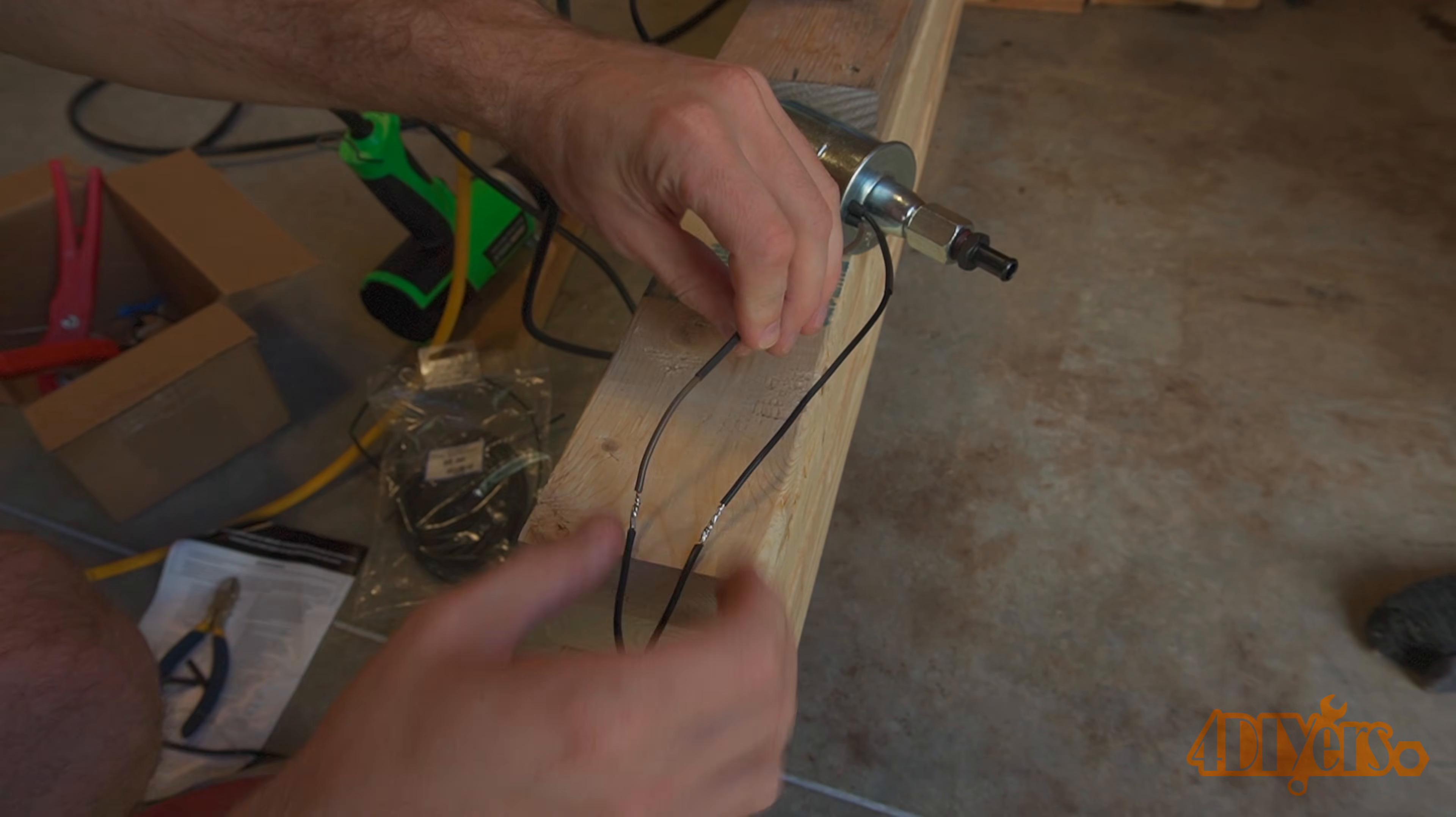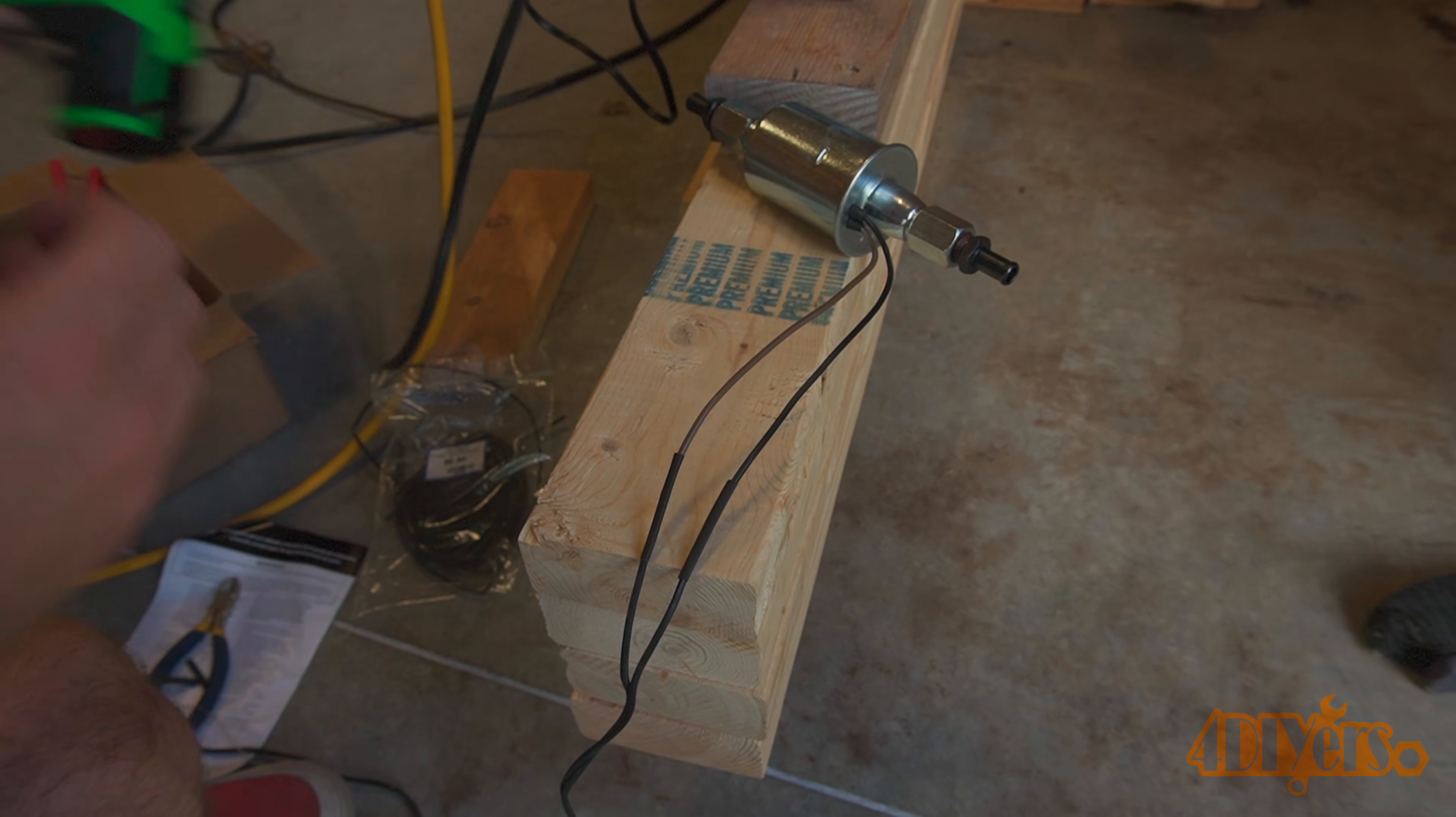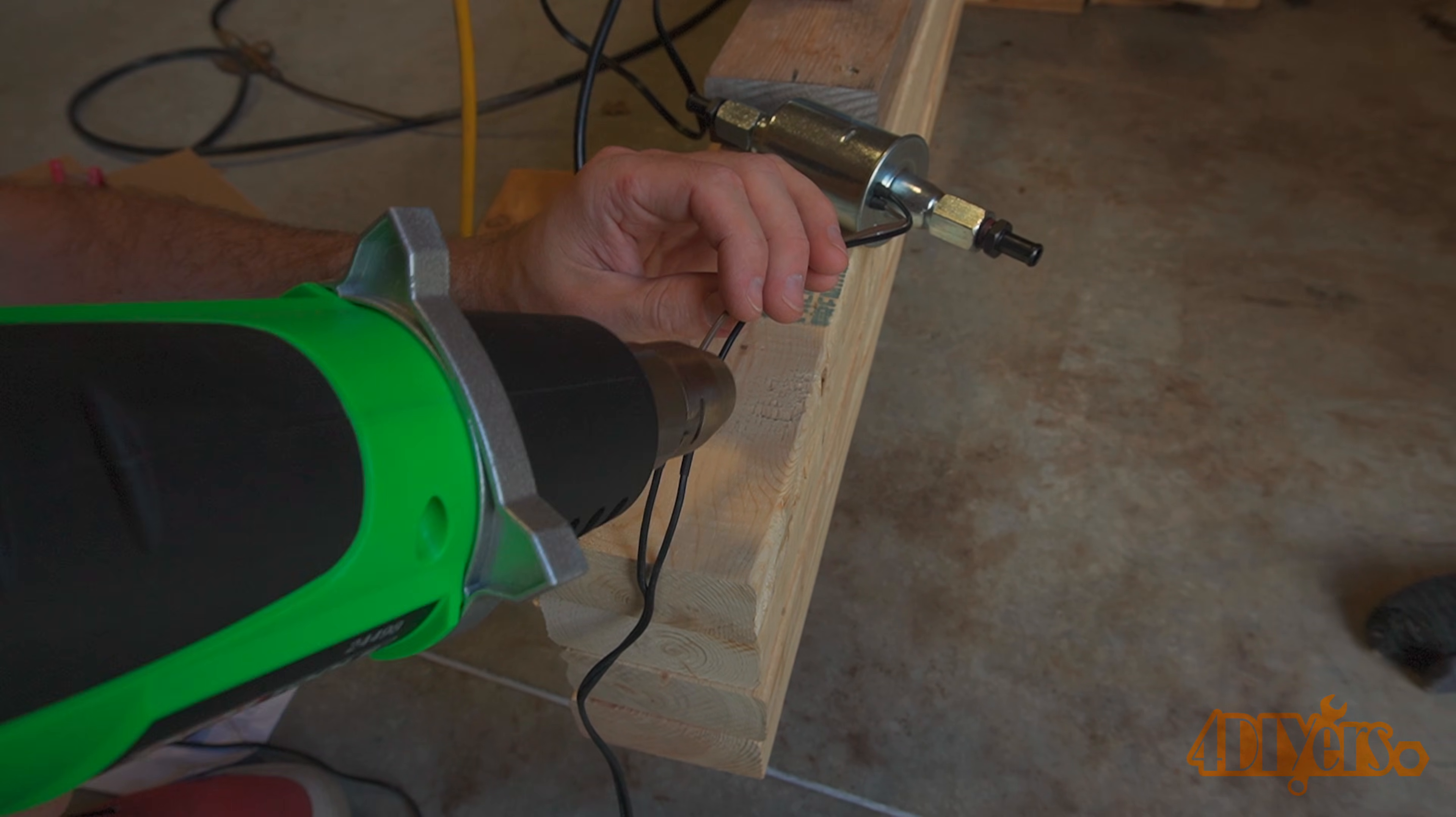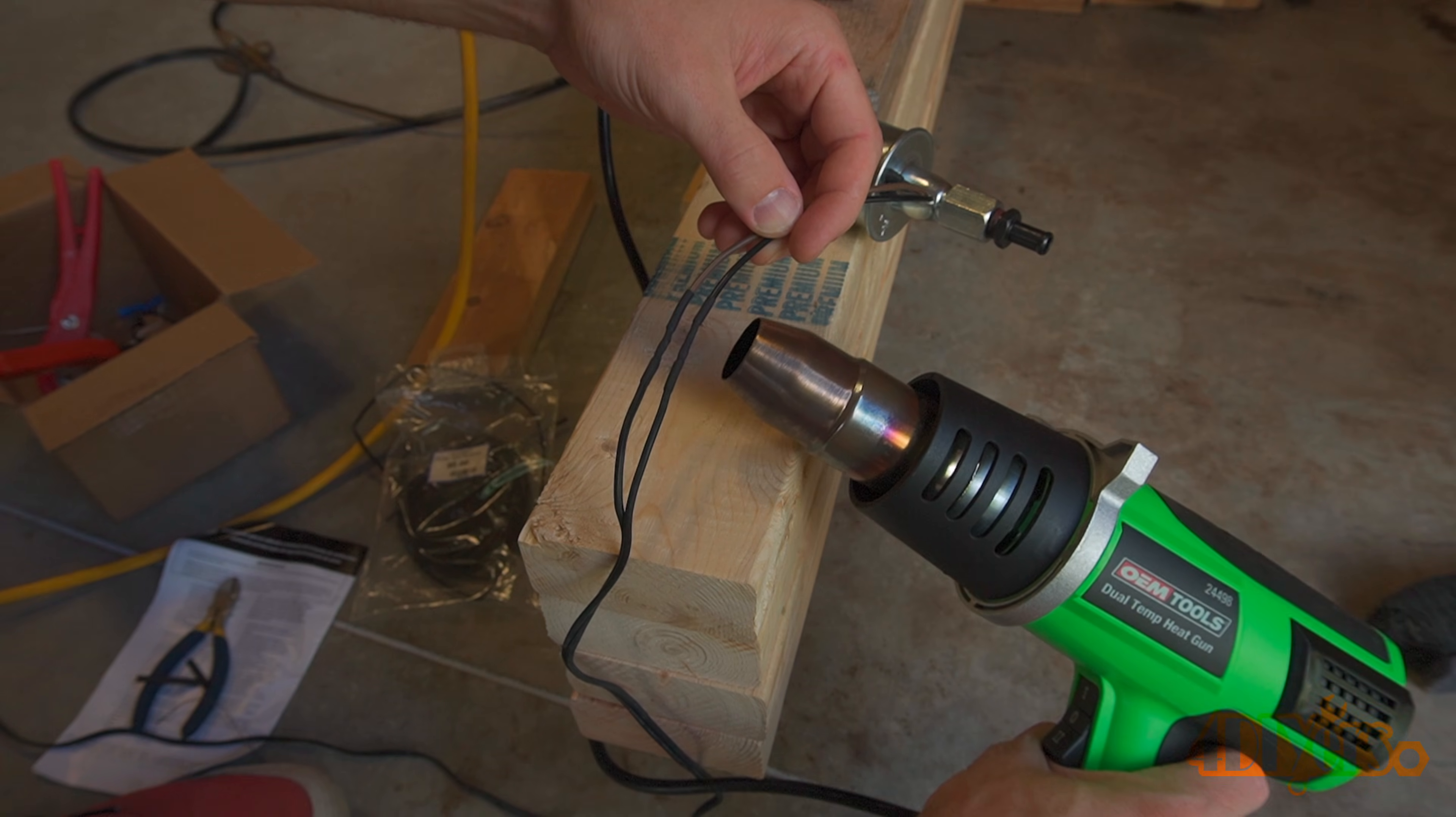After that was using a heat gun for the heat shrink. For this I'm using my OEM Tools 24498 dual temperature heat gun. This has stood the test of time with my various projects. It comes in a blow mold case to keep everything neatly packed with various attachments. Rated at 1500 watts and is able to reach a temperature up to 450 degrees Celsius or 842 degrees Fahrenheit. A link to this will be included in the video description to Mobile Distributor Supply.